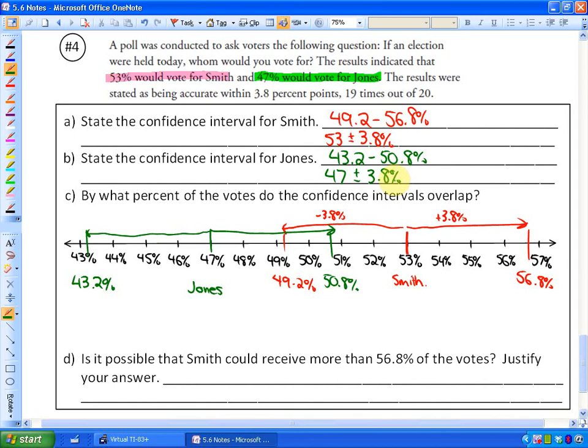By what percent of the votes do the confidence intervals overlap? Well, you can see here that the confidence intervals overlap only in this part, and that's between, I can answer that right here, between 49.2% and 50.8%. That's where they overlap.